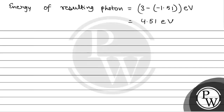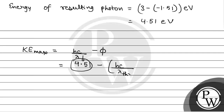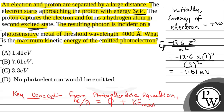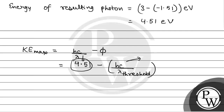Now applying the photoelectric equation: K max is equal to hc by lambda minus phi. The energy of the photon hc by lambda is 4.51 electron volt. The work function phi equals hc by lambda threshold. We are given lambda threshold as 4000 angstrom. In electron volt, energy is calculated as 12400 by lambda in angstrom.